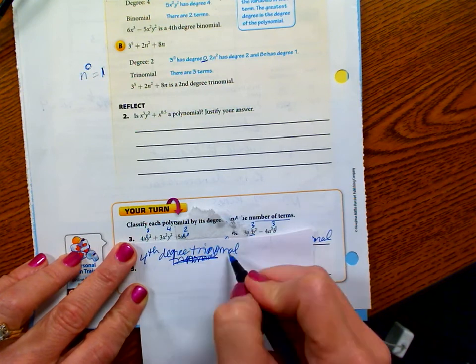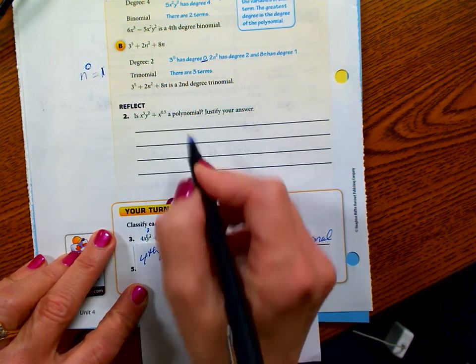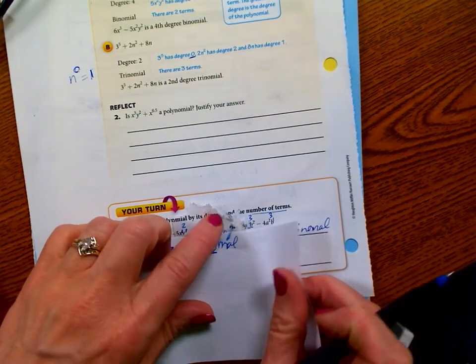Oh my gosh. Okay. Oh, I spelled it wrong. Anyway, fourth degree trinomial. Check your spelling up here. Okay, this next one. I'm going to put this back now.